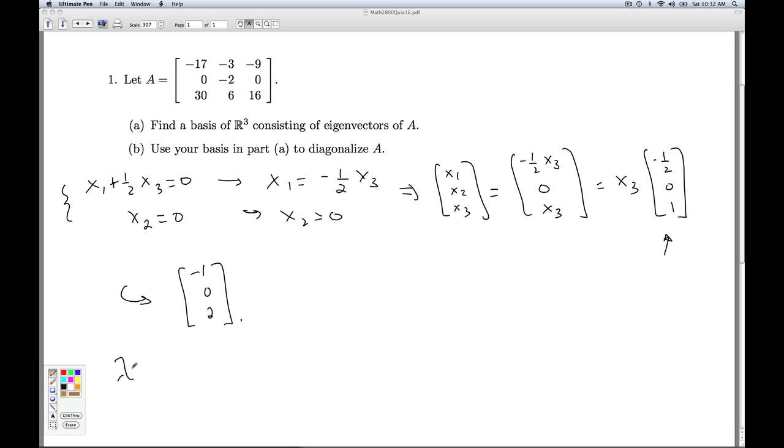So from lambda equals negative 2, I get negative 1, 5, 0, and I get negative 3, 0, 5. And you can go ahead and check. When you multiply the matrix A times each of these vectors, you end up just getting negative 2 times each of those vectors. These are clearly linearly independent. Non-zero entry here, but zero entry here, and the same thing happens down here.